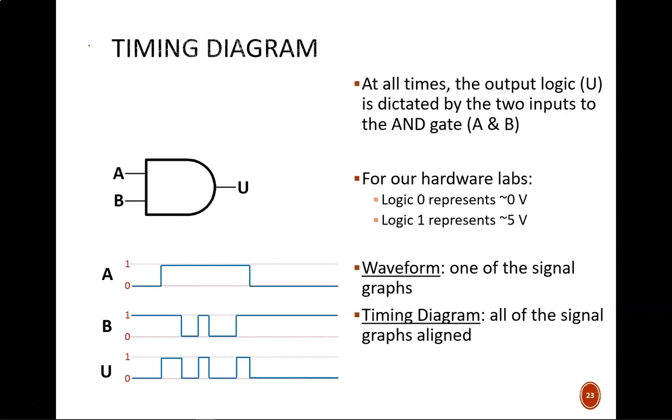Timing diagrams are a useful tool for analyzing circuits that have already been built. They are also useful for testing our knowledge of how logic operations work. What you see in this example is one timing diagram with three waveforms. Each waveform can jump between zero or one. In reality, zero would be near zero volts, and one would be near five volts for our hardware labs.